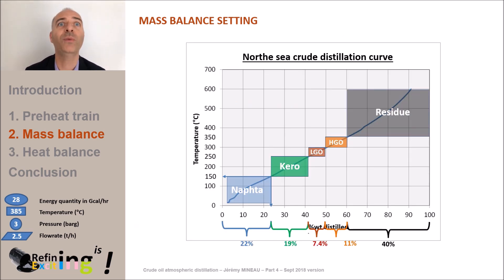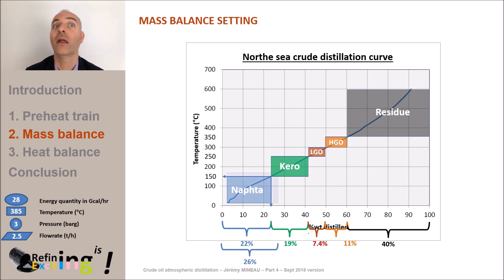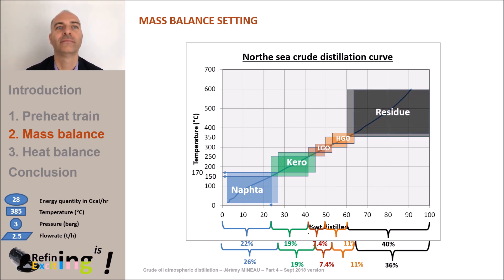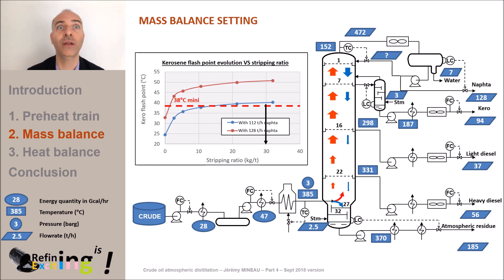We can see on this graph what happens when we decide to extract more naphtha from the tower. From 112 to 128 tonnes per hour, this means an increase in the naphtha rate from 22 to 26% of crude oil. Therefore, the naphtha-kerosene cut point is increased from 150 to about 170°C. Since kerosene, light diesel, and heavy diesel rates are kept unchanged, our cuts shift to the right — in other words, they get heavier. As a consequence, the rate of residue must decrease to satisfy the overall mass balance. The lightest molecules from the kerosene move to the naphtha, and since the kerosene flow rate is unchanged, we have a heavier kerosene. As a consequence, kerosene withdrawal temperature rises from 187°C to 205°C.